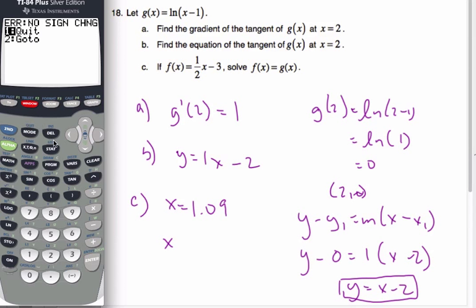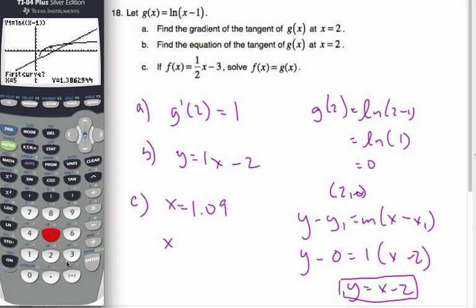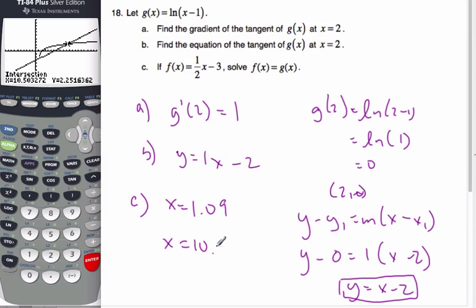I can see they're going to intersect. So let me change this window to 20. Now I know for sure they're going to cross somewhere. Now if I do my intersection, first curve, second curve, I'm going to guess around 15. And I get x equals 10.5. That is the answer.